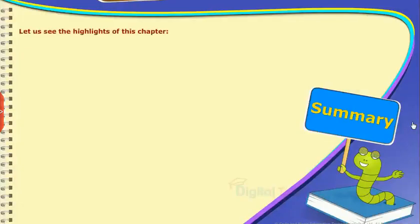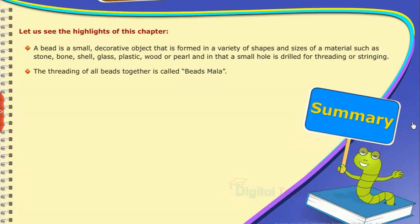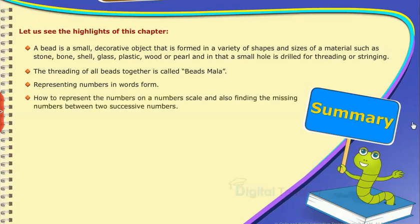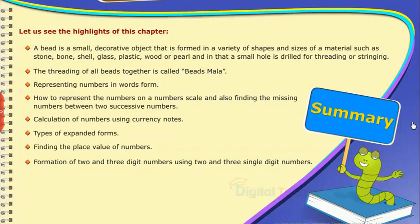Summary: A bead is a small decorative object formed in a variety of shapes and sizes of materials such as stone, bone, shell, glass, plastic, wood or pearl, with a small hole drilled for threading or stringing. The threading of all beads together is called beads mala. The chapter also covered representing numbers in word form, showing numbers on a number scale, finding missing numbers, calculation using currency notes, types of expanded forms, finding place value, and forming 2 and 3 digit numbers. This chapter covers knowing numbers up to 1000.